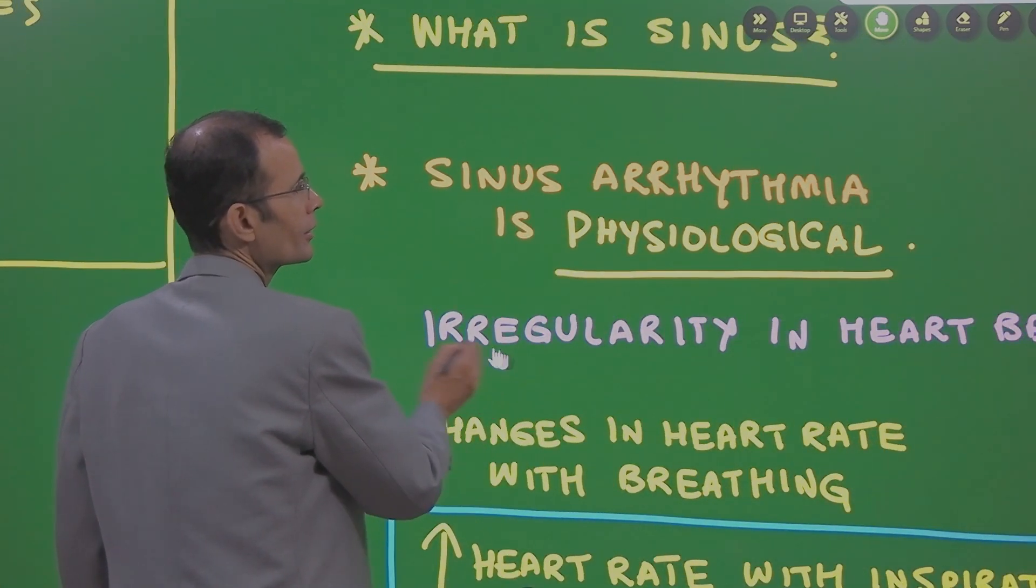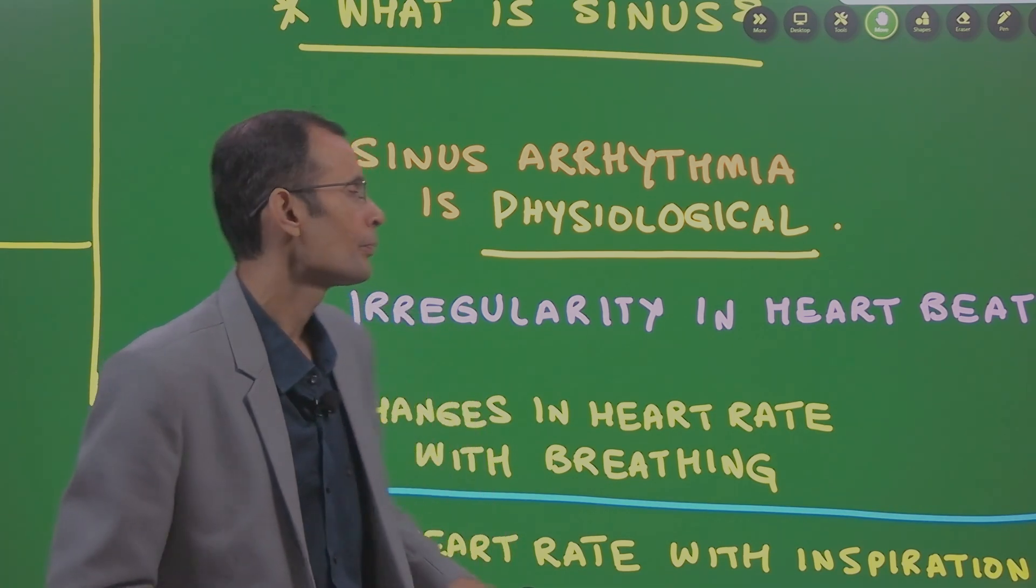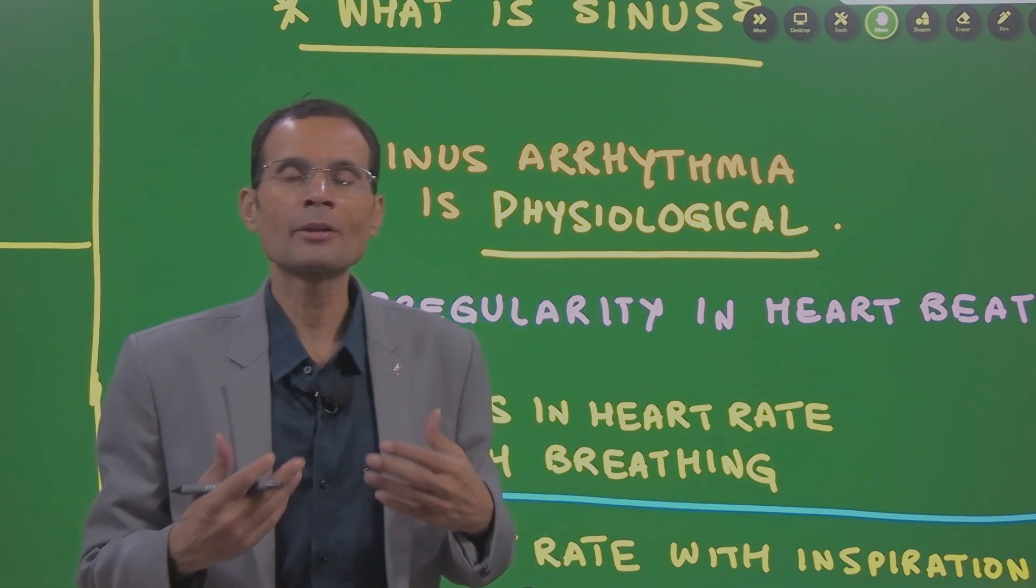In this particular context, the sinus would mean SA node and arrhythmia. Whenever we come across arrhythmia, what comes to your mind is some kind of rhythm disturbance in the heart which may be fatal.